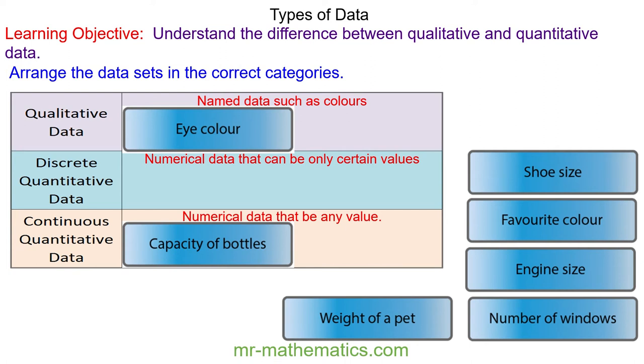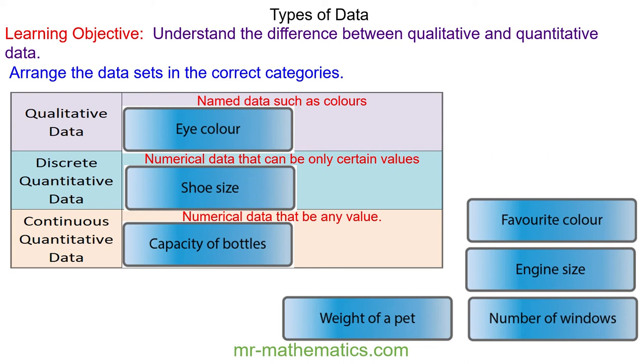Shoe size is discrete quantitative because you can only have a specific shoe size. For instance you cannot have a size 2.67.